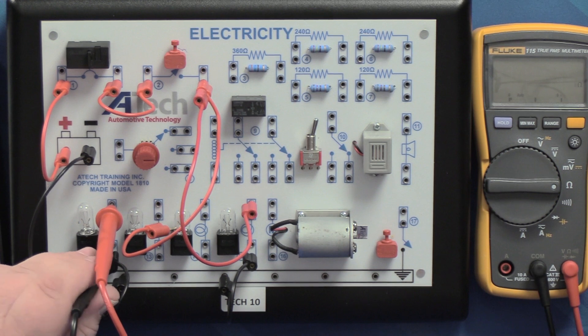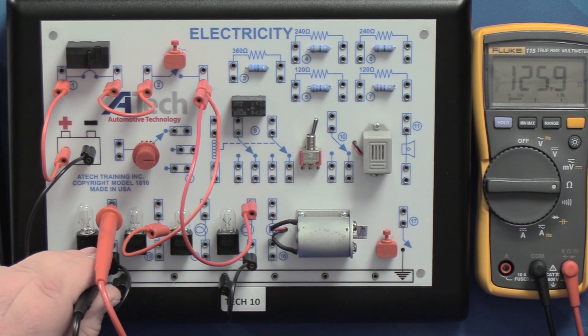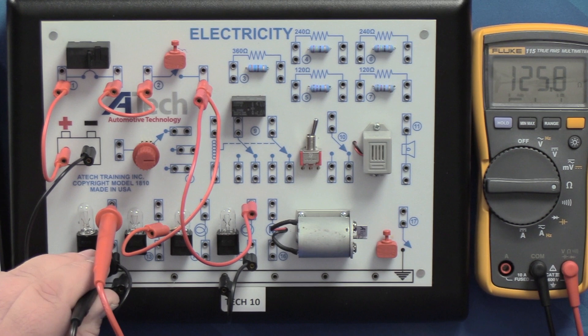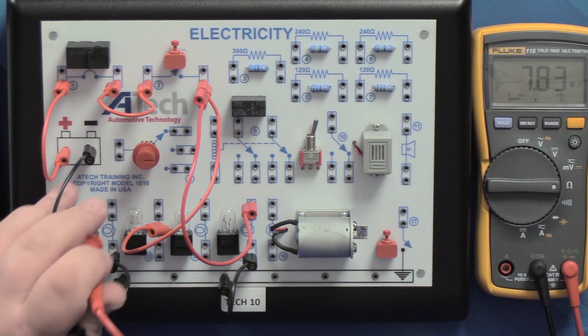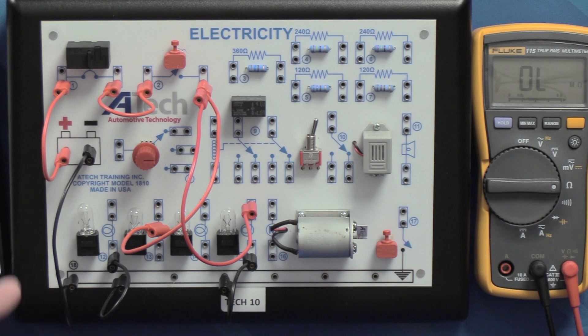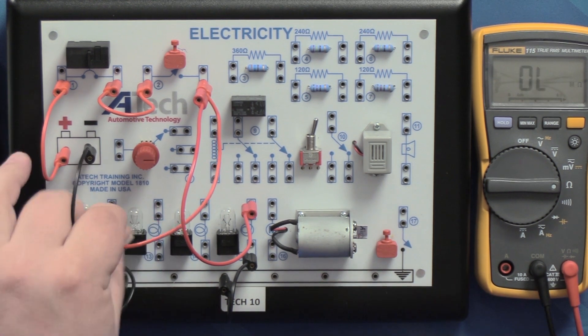I'm going to pull this lead out here, I'll put our positive lead on the top side of the light bulb, negative lead down here on the bottom side of the light bulb. Let's see how much resistance we have here. Oh I got 125 ohms, there's a resistance across that light bulb, so I feel like we're pretty much on track here to say that there's high resistance in this connector for this light bulb.